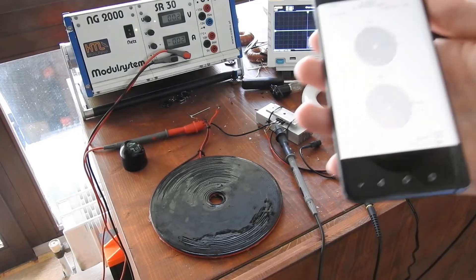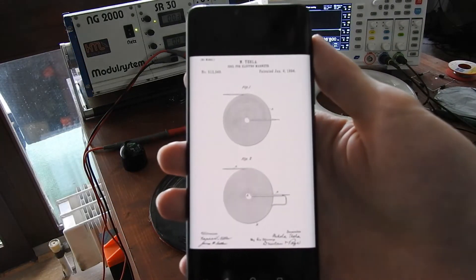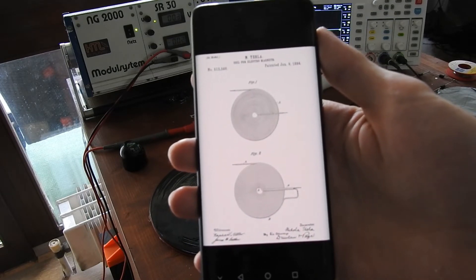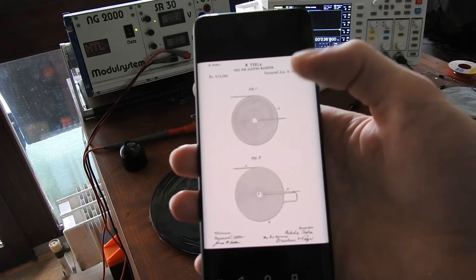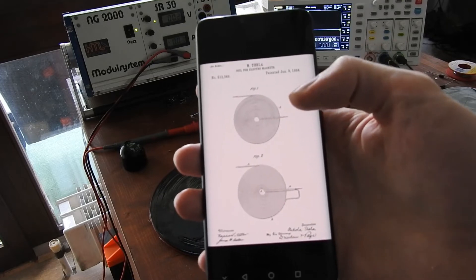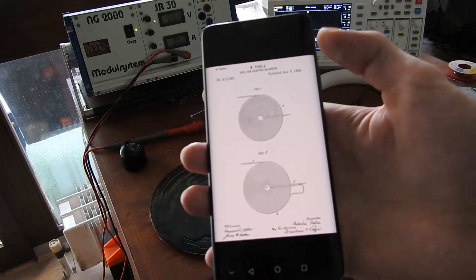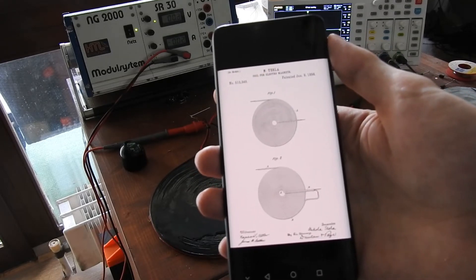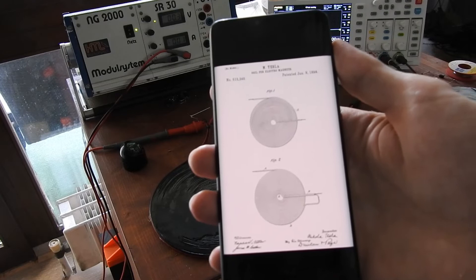First off let me show you the patent from Nikola Tesla from 1894. He called it coil for electromagnets and on top here you can see a monofiler coil and here a bifilar coil. It is patent number 512340 if you want to look it up.